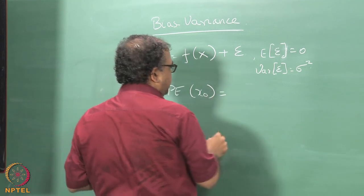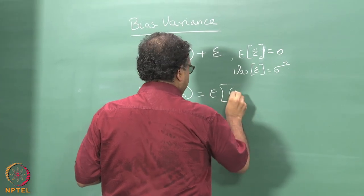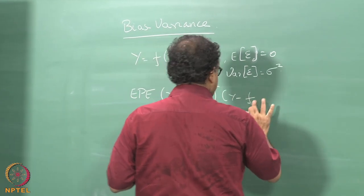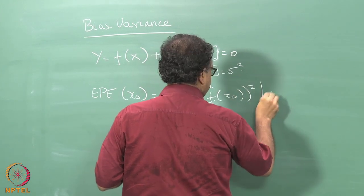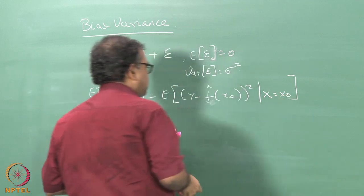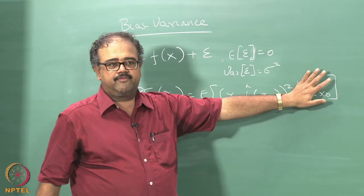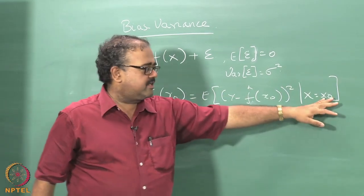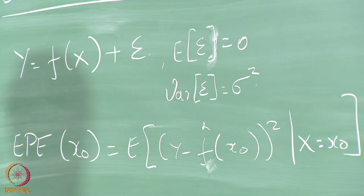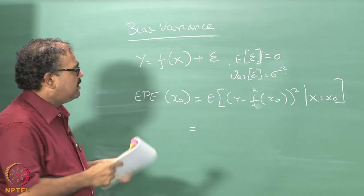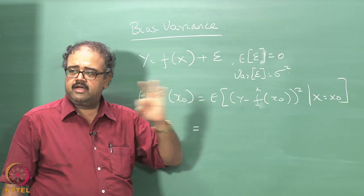The expected prediction error at some point X0 is essentially — we knew what the expected prediction error was — that was (Y minus f-hat of X) whole squared, but at the point X0 I am just conditioning on X0, and this is my prediction error. It turns out that I can rewrite this expectation as a sum of 3 terms.